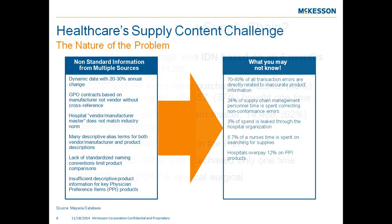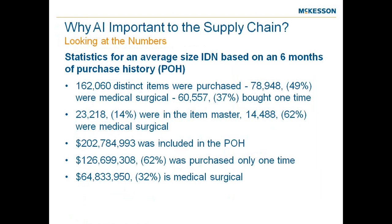Looking at an average medium-sized Midwest IDN over six months of purchase order history, we found about 162,000 distinct items being purchased, both med-surg and other items. About 78% were med-surg. About 60% of those med-surg items were bought only one time, accounting for about 37% of spend. About 23,000 of those items were ordered outside of the item master, of which about 4,000 were physically med-surg. By dollars, about $202 million was included in that purchase order history.